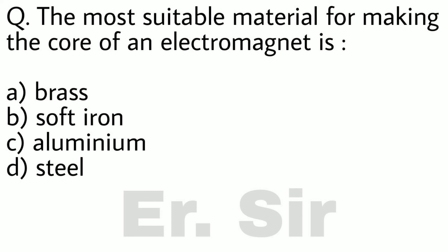Next, the most suitable material for making the core of an electromagnet is brass, soft iron, aluminum, or steel.